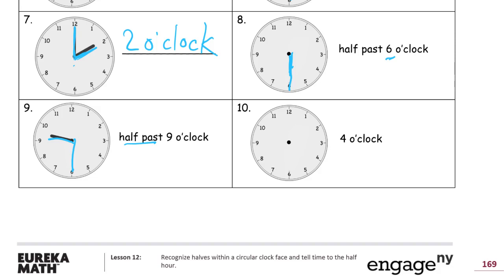4 o'clock — we're just drawing clock hands. It doesn't have to be perfect, you just want it to look right. For 4 o'clock, the minute hand is going to go straight up to the 12, right up here, straight down. Then 4 o'clock, the hour hand goes to the 4. The hour hand's not going to be as long as the minute hand, so it starts there and goes right back to the middle. 4 o'clock.